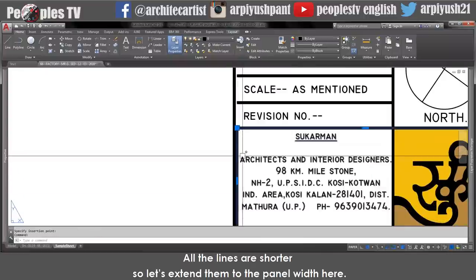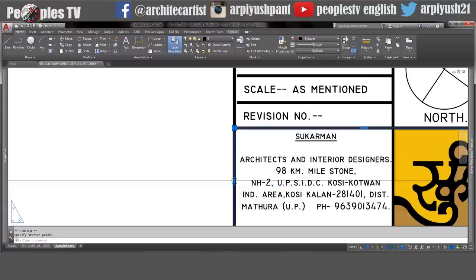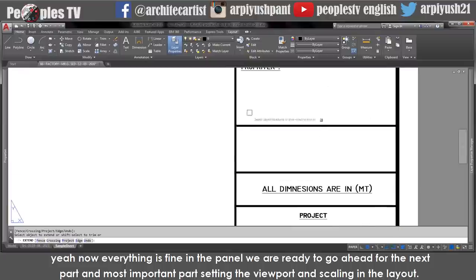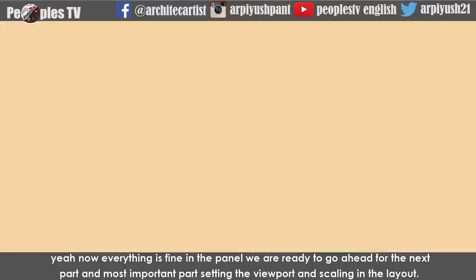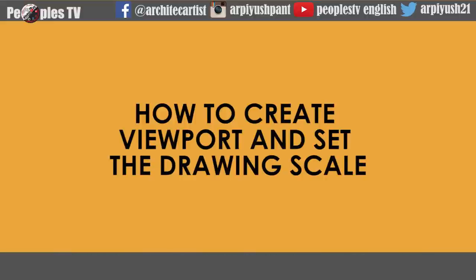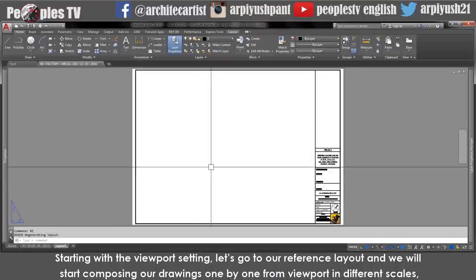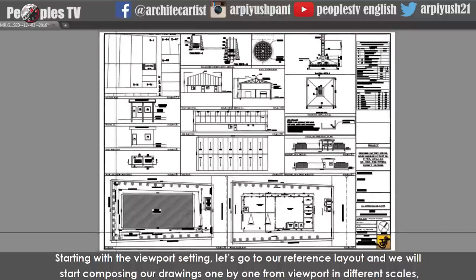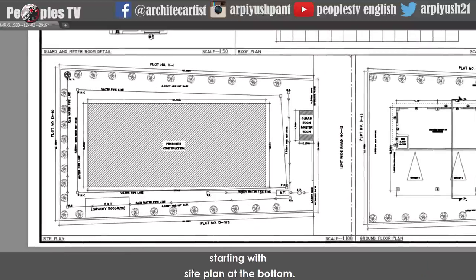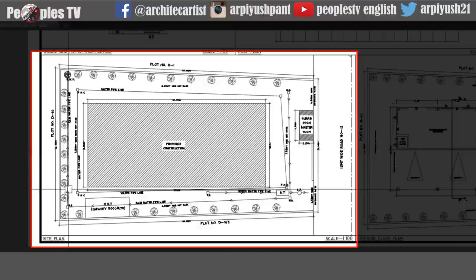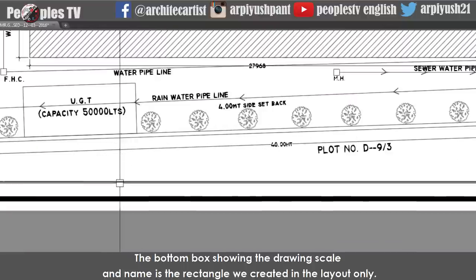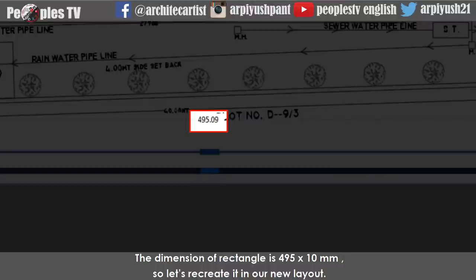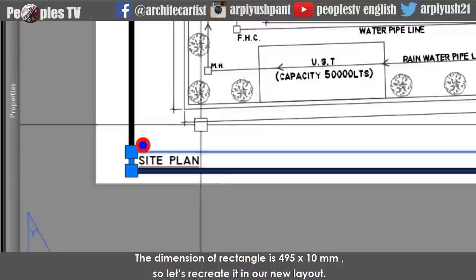Now everything is fine in the panel. We are ready to go ahead to the next and most important part — setting the viewport and scaling in the layout. Starting with the viewport setting, let's go to our reference layout and start composing our drawings one by one from viewport in different scales, starting with the site plan at the bottom. The bottom box showing the drawing scale and name is a rectangle we created in the layout. The dimensions are 495 by 10mm.